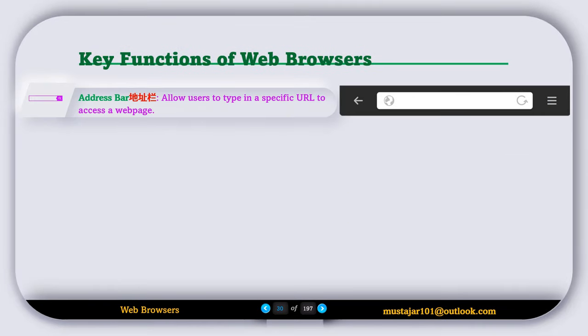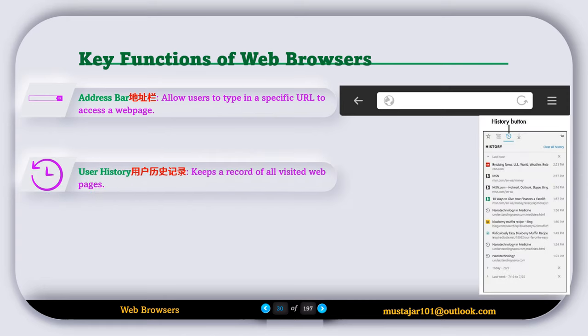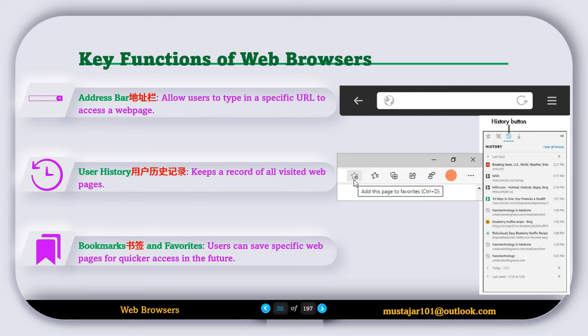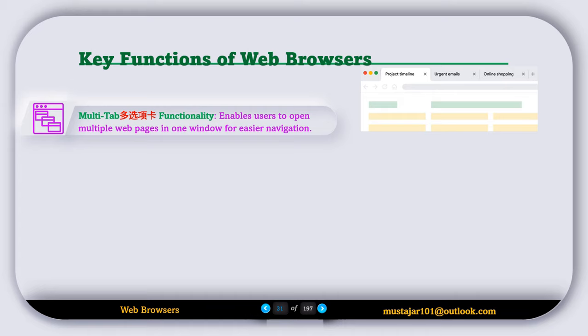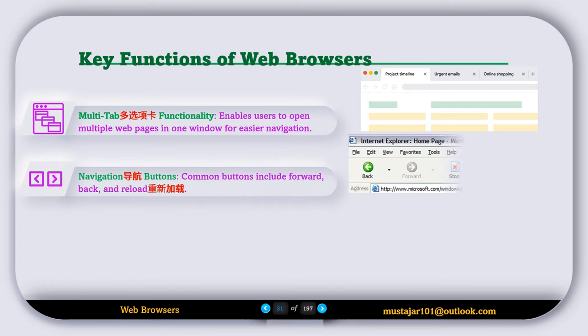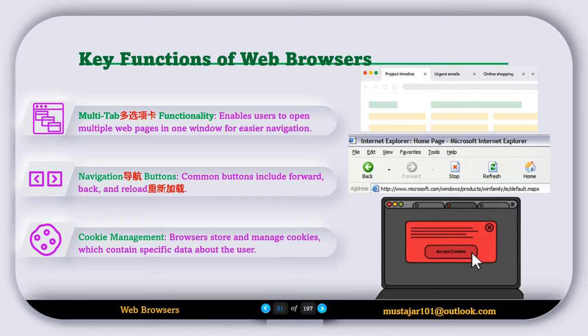Now let's discuss the key features of a web browser. The address bar allows the user to type in a specific URL to access a web page. User history keeps a record of all visited web pages. Bookmarks and favorites let users save specific web pages for quicker access in the future. Multi-tab functionality enables users to open multiple web pages in one window for easier navigation. Navigation buttons include forward, back, reload, and home. Cookies management allows the browser to store and manage cookies, which contain specific data about the user.